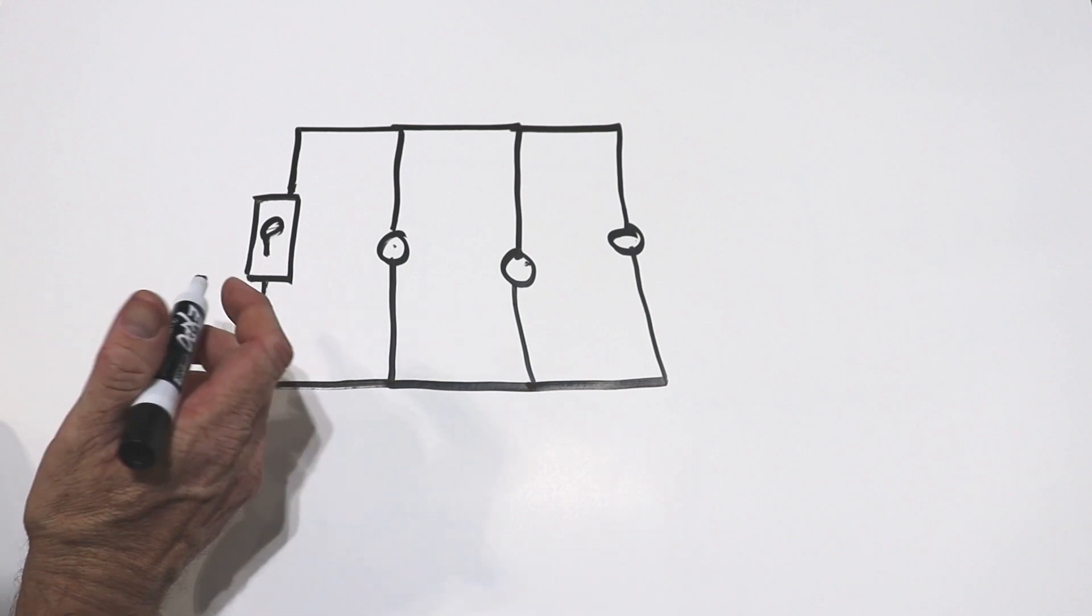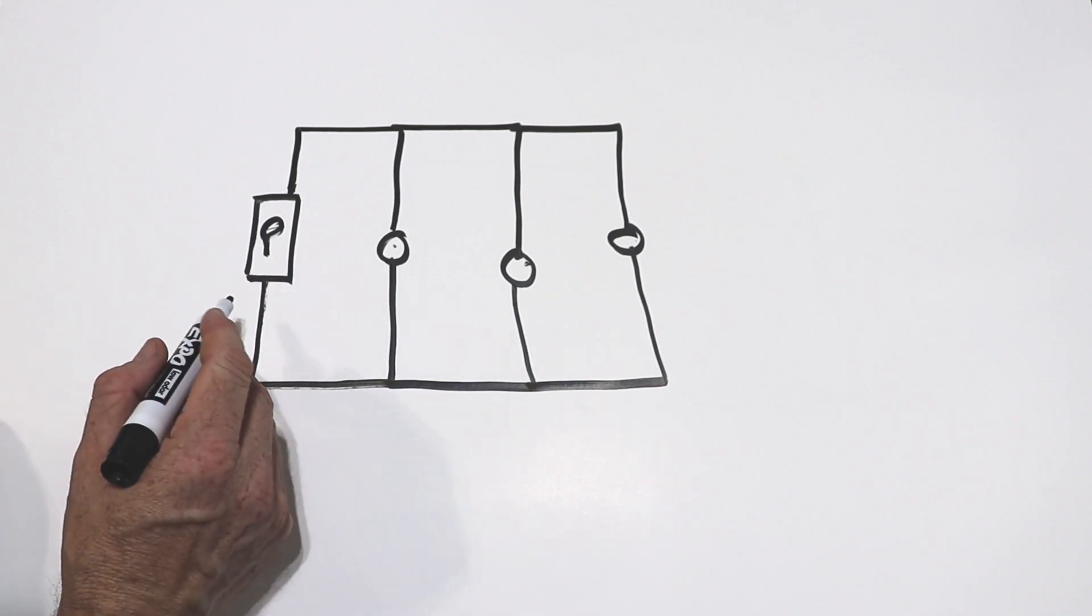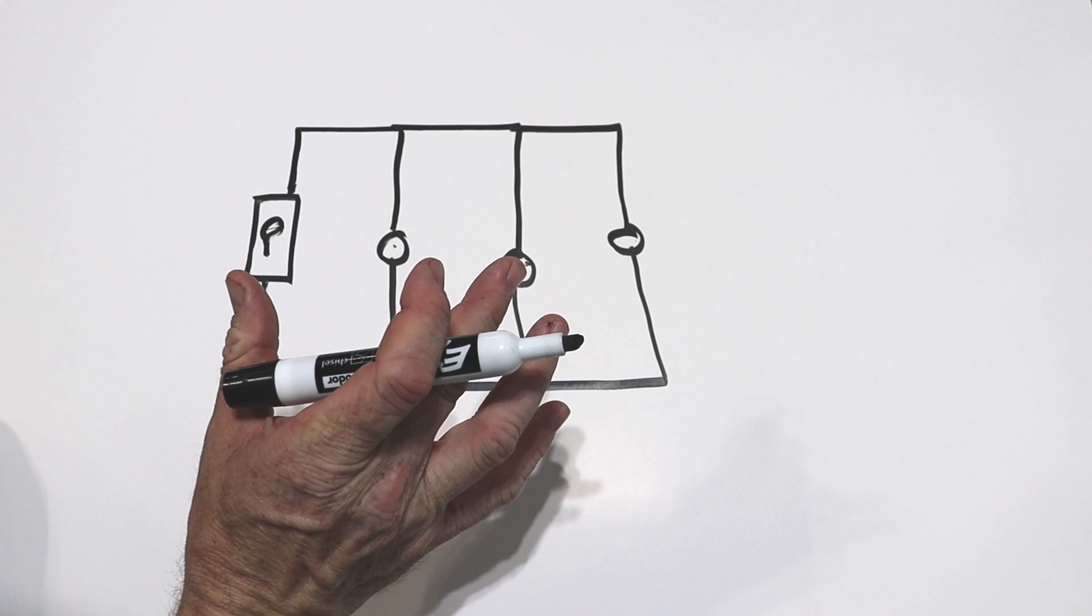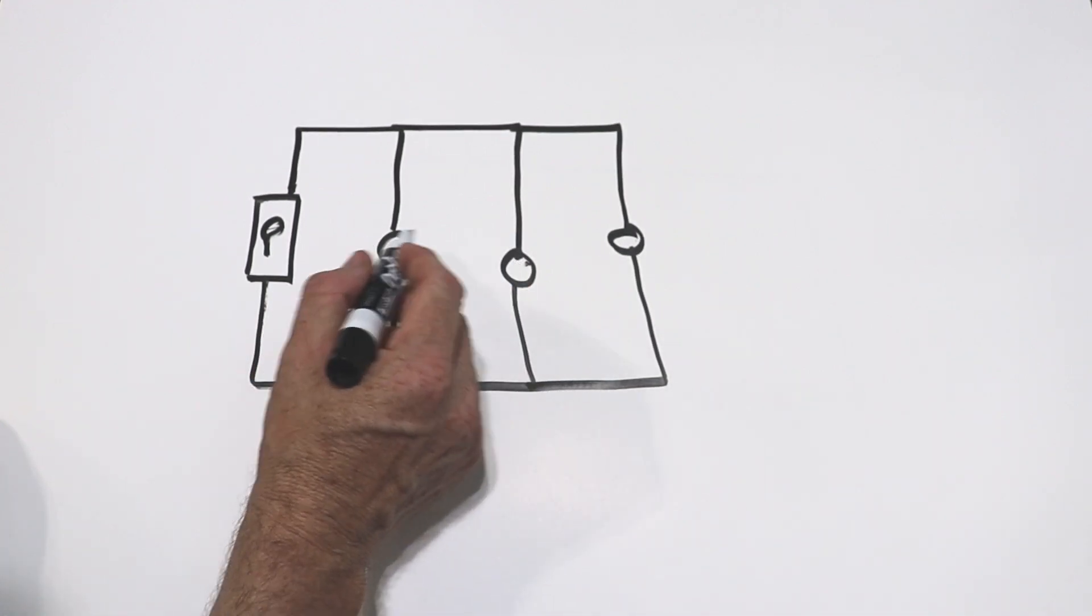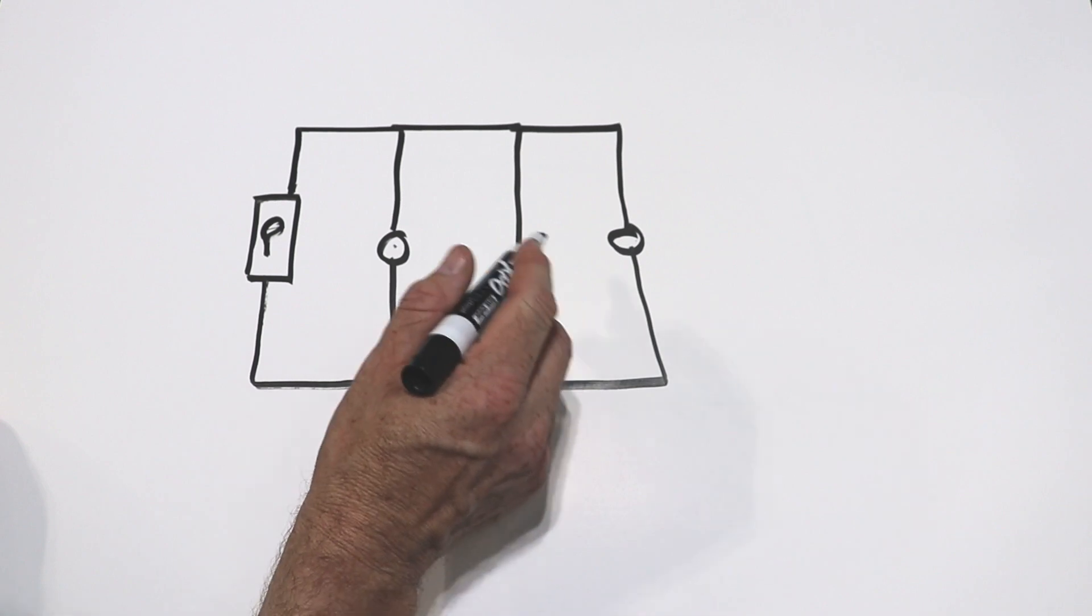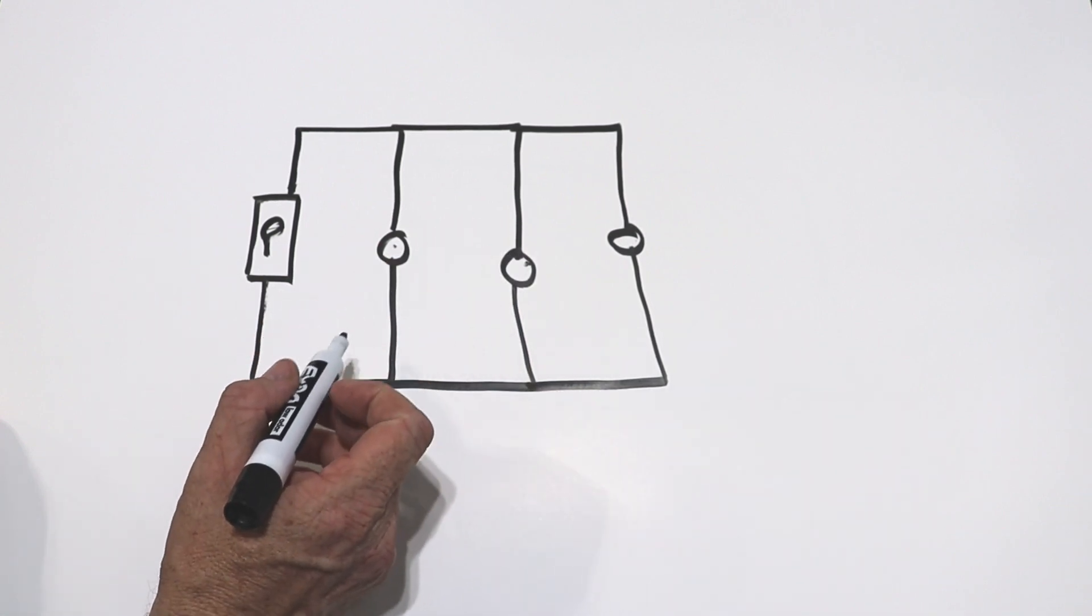So in an AC circuit, this would be our panel box in our house. And so if you want to think about these, let's say these are lights in a room. You've seen how one light bulb can burn out, and all the other lights in the room are still on.